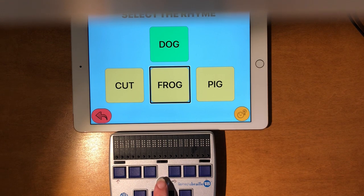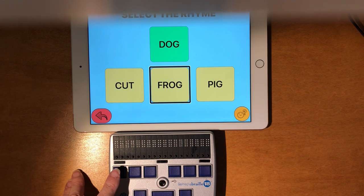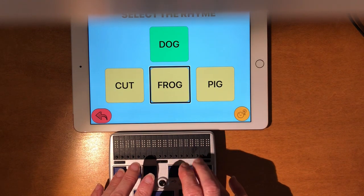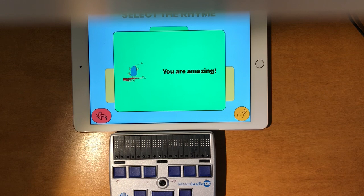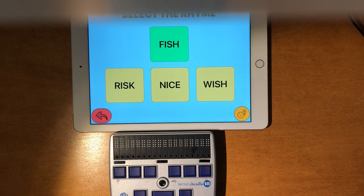And I'm going to select by pushing the joystick in or I could do dot three, dot six, and space bar. You are amazing. Select the rhyme.